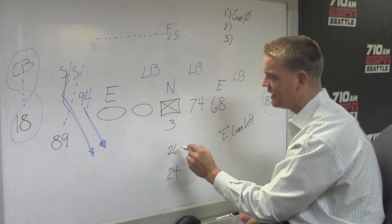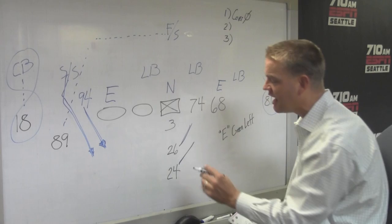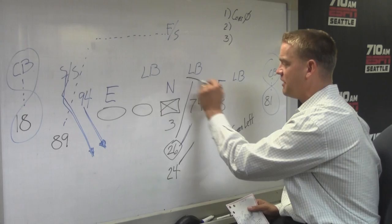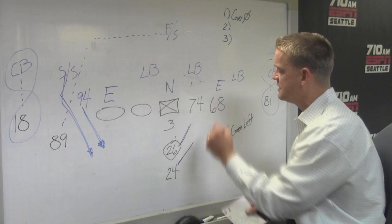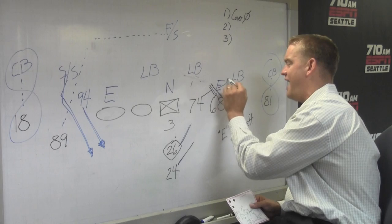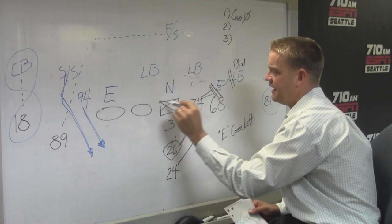The run comes this way for the Seahawks. Instead of the blast concept where they would have left Mack Strong to block that linebacker one-on-one, with all the zone run that the Seahawks do, they get a good double team with Moffitt and Giacomini. They just blow this end out right into the linebacker and he's blind, he has no idea. They're all zoning this way, taking care of their zone.